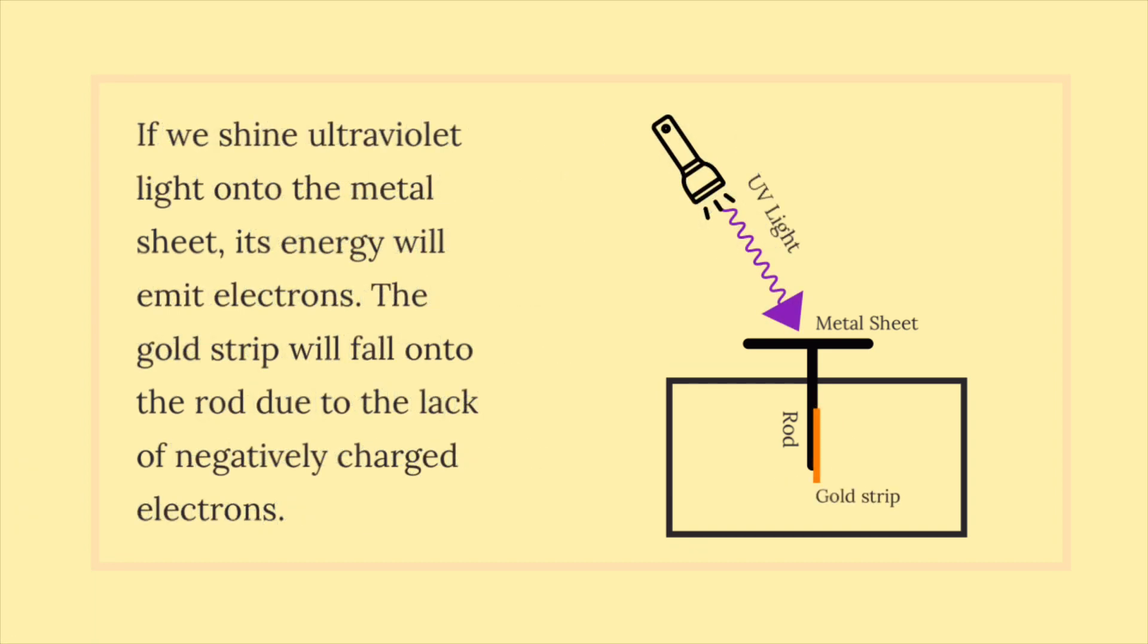If we shine ultraviolet light onto the metal sheet, its energy will emit electrons. The gold strip will fall onto the rod due to the lack of negatively charged electrons.